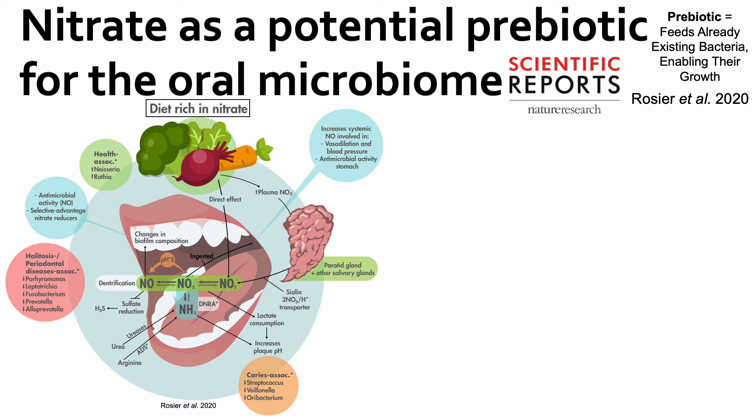Starting from a diet rich in nitrate — including green vegetables, beets, carrots, and other foods — the direct effect is to increase oral levels of nitrate (NO3−) in the mouth. The indirect effect: eating nitrate-containing foods increases plasma nitrate concentration, which gets concentrated in the parotid gland and other salivary glands, which then release nitrate into the mouth.